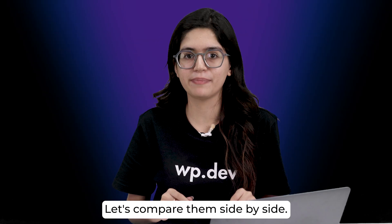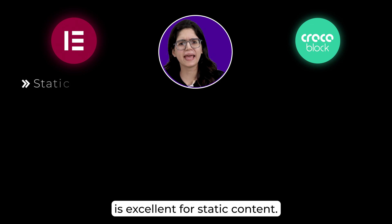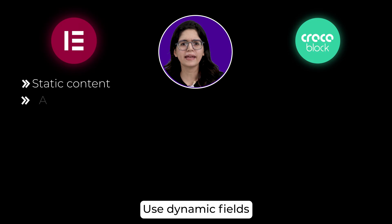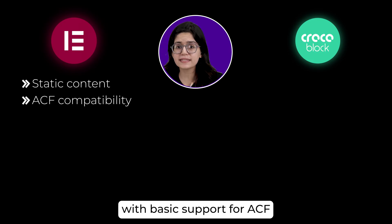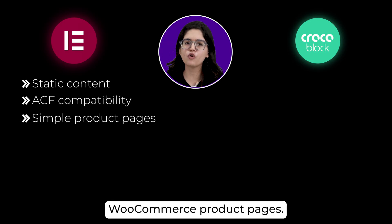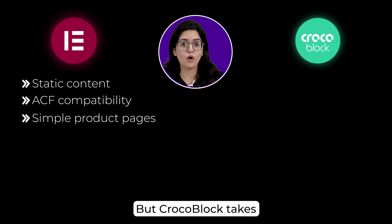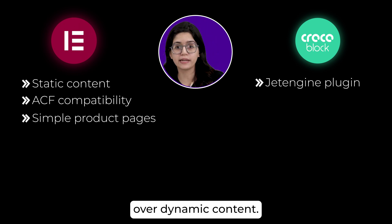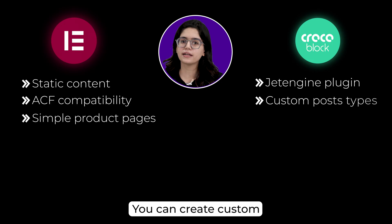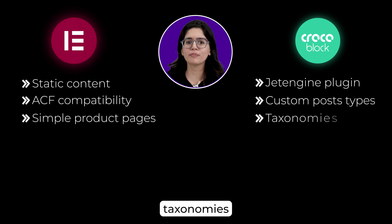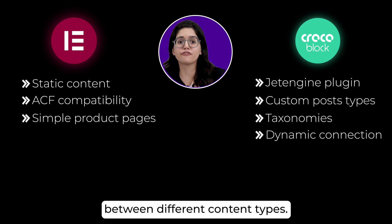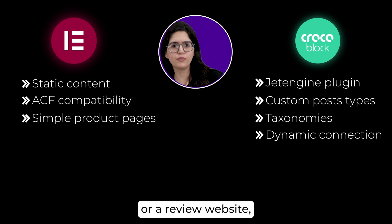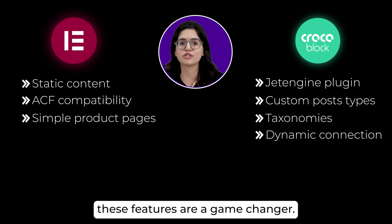Let's compare them side by side. Elementor Pro is excellent for static content. You can create beautifully designed pages, use dynamic fields with basic support for ACF, and build simple WooCommerce product pages. But Crocoblock takes it further with JetEngine, giving you complete control over dynamic content. You can create custom post types, taxonomies, and relationships between different content types. If you're making a directory, a real estate platform, or a review website, these features are a game changer.